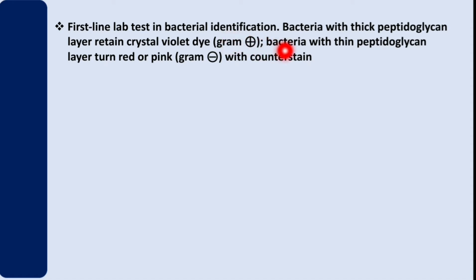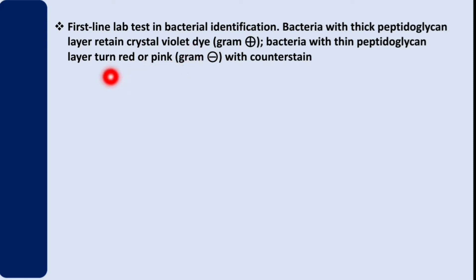Bacteria with a thin peptidoglycan turn red or pink, and those ones are called Gram negative — they turn red or pink with the counter stain. But there is another group that cannot be stained using this method of Gram staining. I want to tell you about those bacteria and then give you a mnemonic to help remember them.